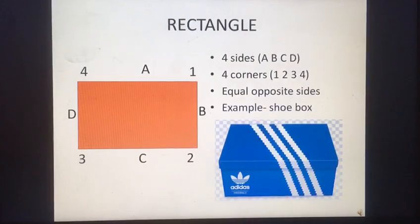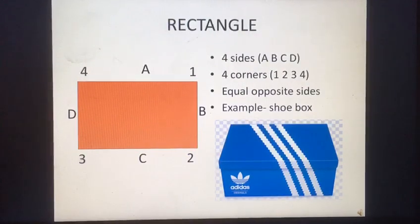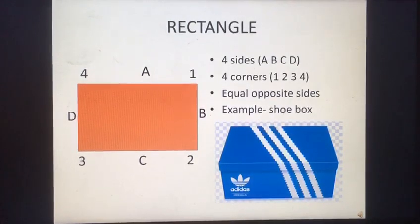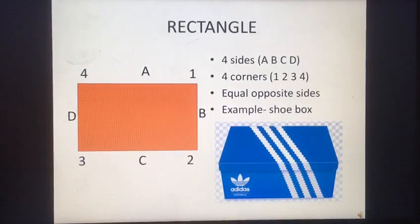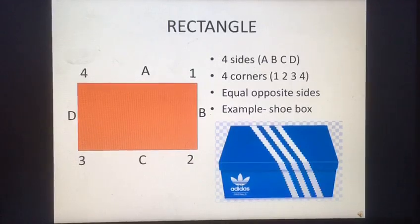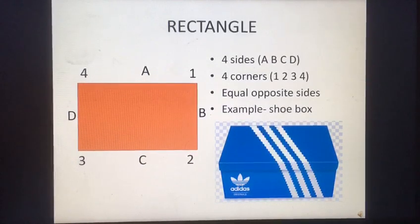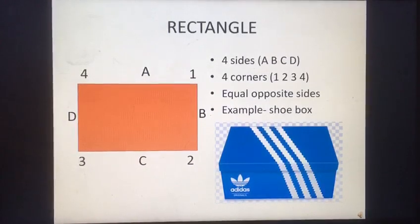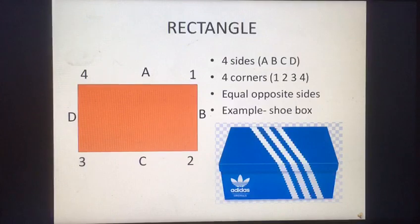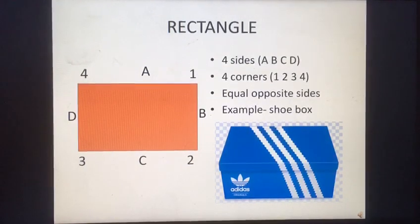Rectangle. It has four sides — A, B, C, D — and four corners: one, two, three, four. Its opposite sides are equal. Example: shoebox.